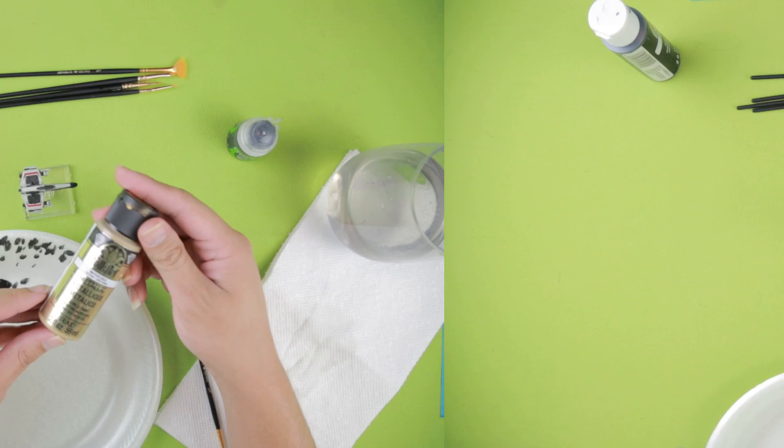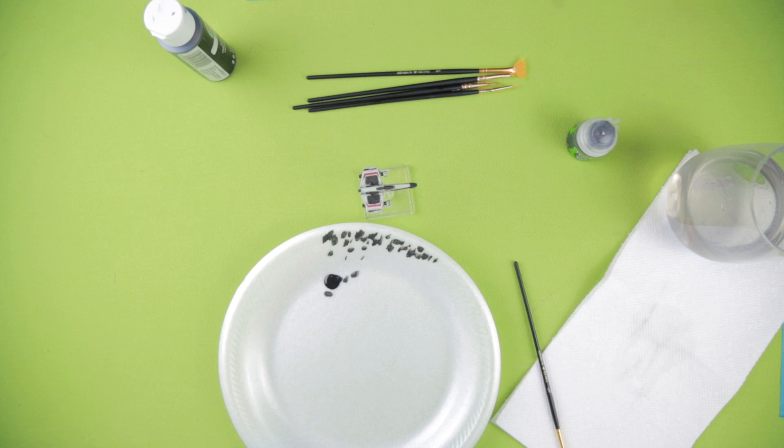For this I'm using Folk Art Metallic Gold. You kind of have to shake it up a lot and a lot of the time you'll have to do multiple coats with it because of the way it goes on and how translucent it really is.